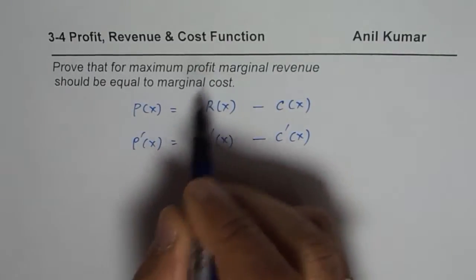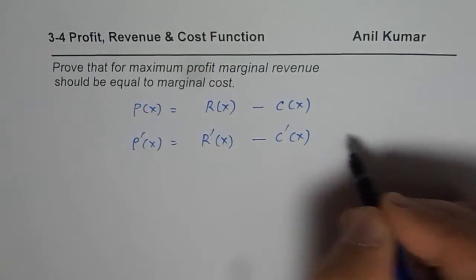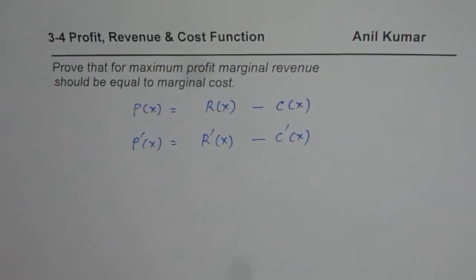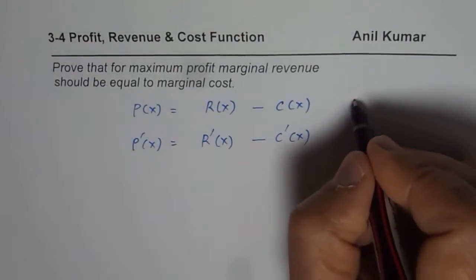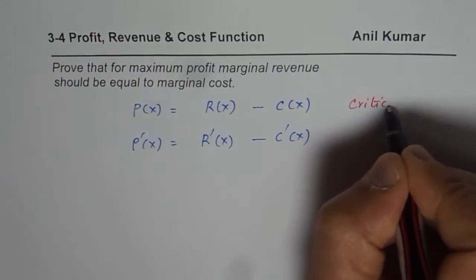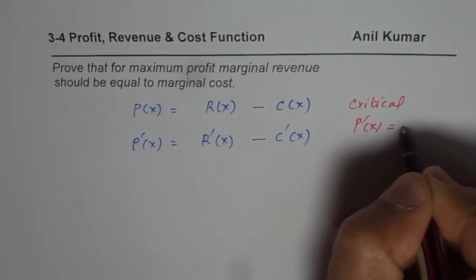Now, for maximum or minimum, we need to find a critical number. So the critical number is when profit is zero. So rate of change of profit is zero. For critical number, rate of change of profit equals zero.